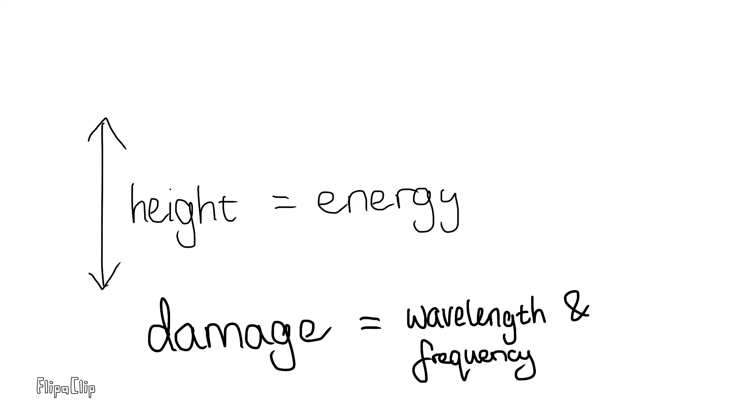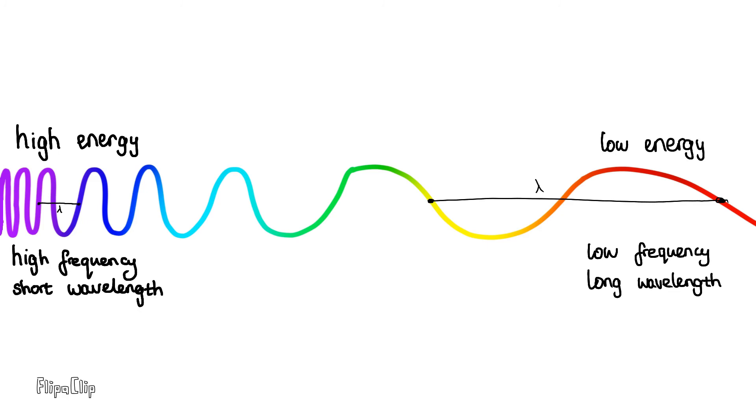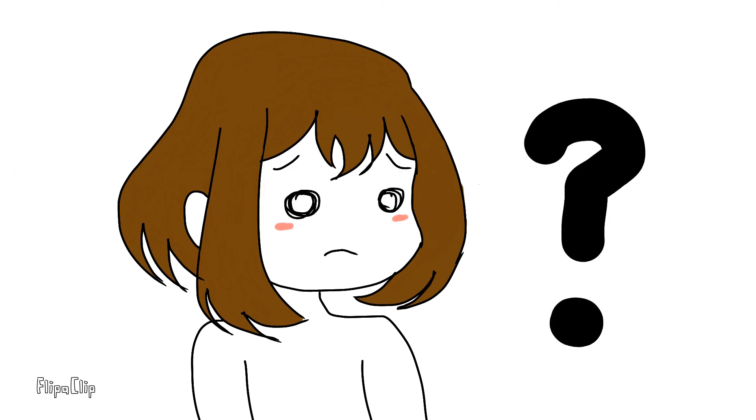To be more specific, replace the height reached with the amount of energy and the degree of damage with the wavelength and frequency. The more energy, the greater the frequency, the shorter the wavelength, and the purpler the color, and vice versa. Now, if you're confused as to how energy affects the color, let's dive into GCSE physics for a bit.